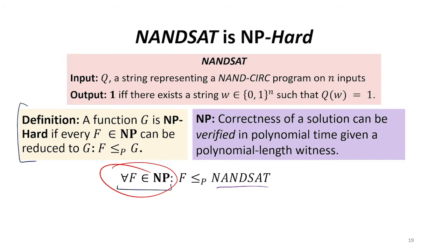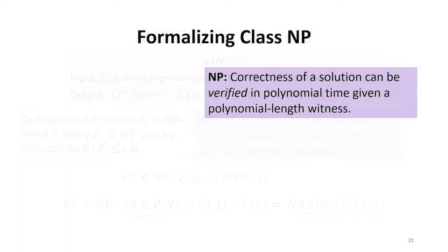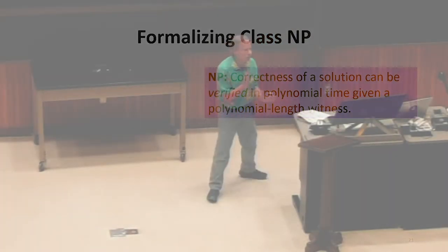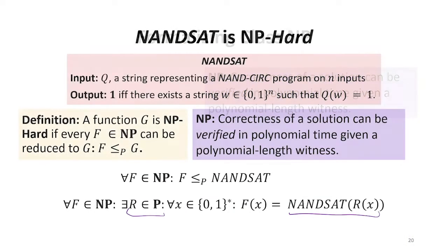So if we can show that leads us to a reduction, we can use that verifier and use NANSAT to verify any function, just because we know the verifier exists. We can't assume anything about it other than it exists. What we want to find is: there exists some reduction R such that evaluating NANSAT on R(x) gives us the value of f(x) for any f in class NP. We need to formalize the definition more carefully. In order to do this, we're going to use the verifier and the witness to construct R.